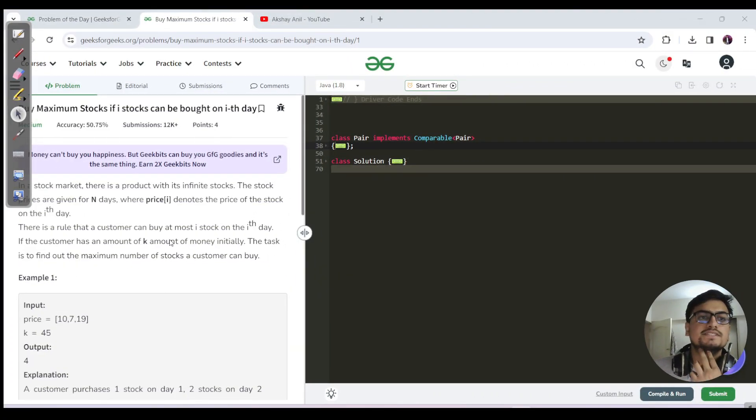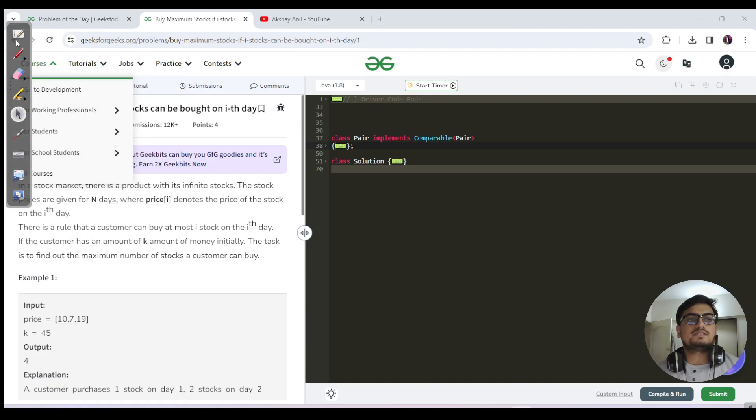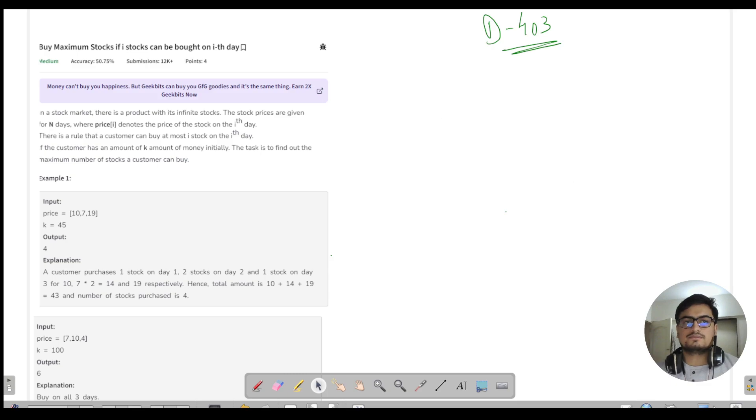What's up guys, this is Laksha here. Let's see what today's question is about. Today is day 403. Let's see what this question says and how many approaches there are to solve it. We need to find buy maximum stocks if i stocks can be bought on the ith day.